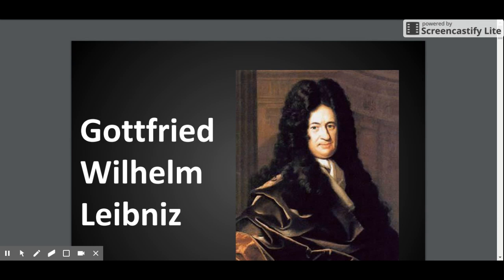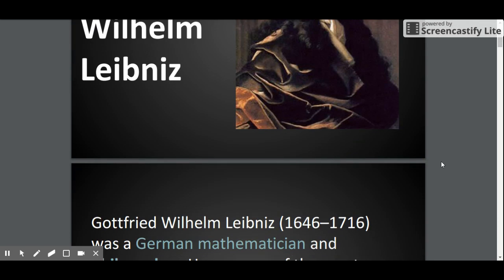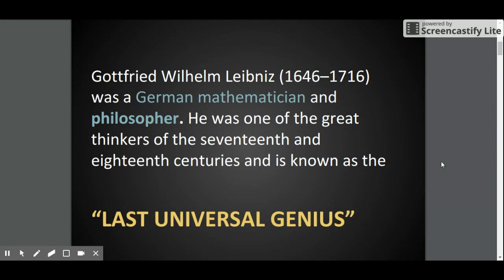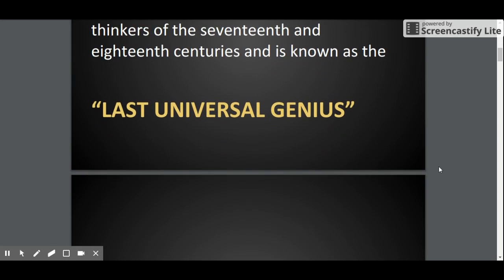The scientist today we are going to discuss is Gottfried Wilhelm Leibniz. He is a famous German mathematician and philosopher. He lived from 1646 to 1716. He is also known as the last universal genius.